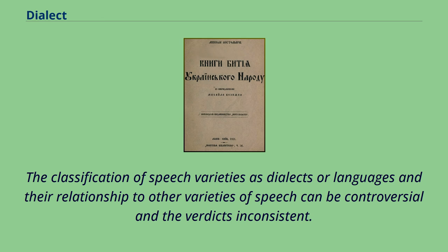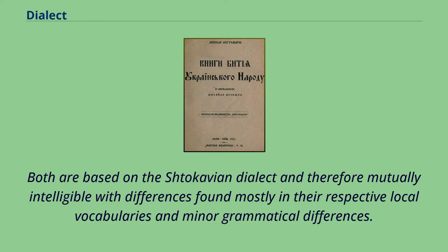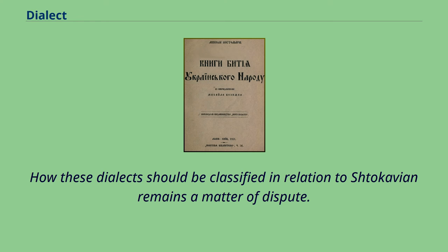The classification of speech varieties as dialects or languages and their relationship to other varieties of speech can be controversial and the verdicts inconsistent. Serbo-Croatian illustrates this point: it has two major formal variants, both based on the Štokavian dialect and therefore mutually intelligible, with differences found mostly in their respective local vocabularies and minor grammatical differences. Certain dialects of Serbia and Croatia, however, are not mutually intelligible even though they are usually subsumed under Serbo-Croatian, and how these dialects should be classified in relation to Štokavian remains a matter of dispute.